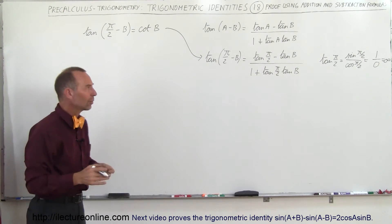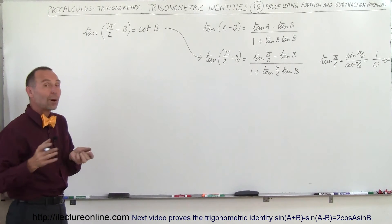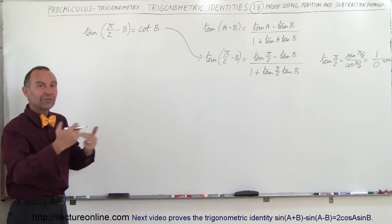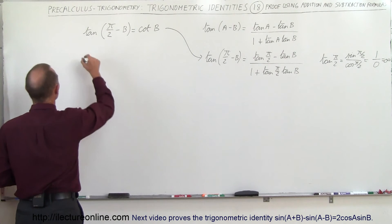So that happens sometimes. Don't be discouraged — say well, there's got to be another way. Maybe what we can do here is convert the tangent to sine divided by cosine. So let's try that.